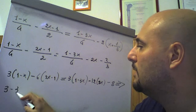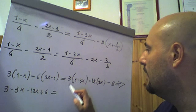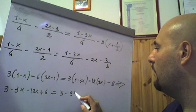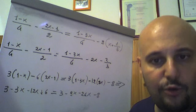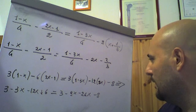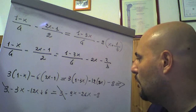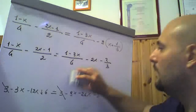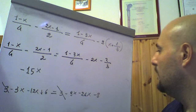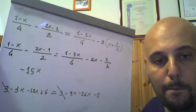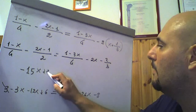Expanding: 3·1 = 3, 3·(−x) = −3x; −6·(2x) = −12x, (−6)·(−1) = +6; equals 3·1 = 3, 3·(−3x) = −9x; −12·(2x) = −24x; −8. Applying cancellation: the 3 on both sides cancels. Summing on the left: −3x − 12x = −15x. Summing on the right: −9x − 24x = −33x, transported to the left becomes +33x. On the right remains −8, and 6 transported from left to right becomes −6.